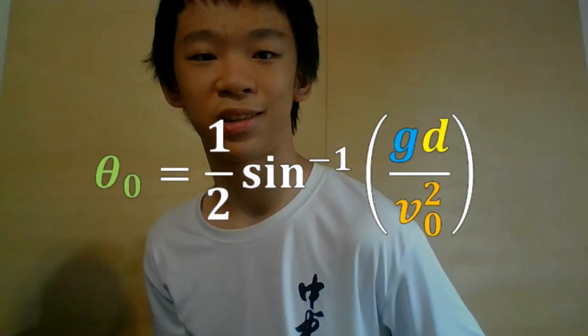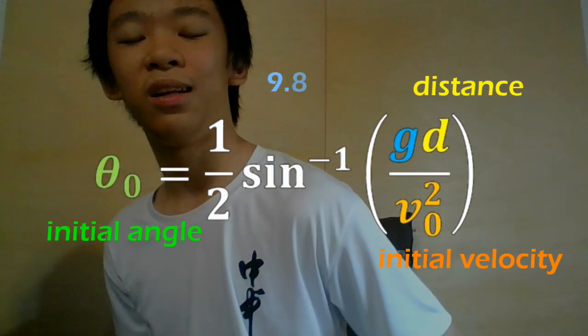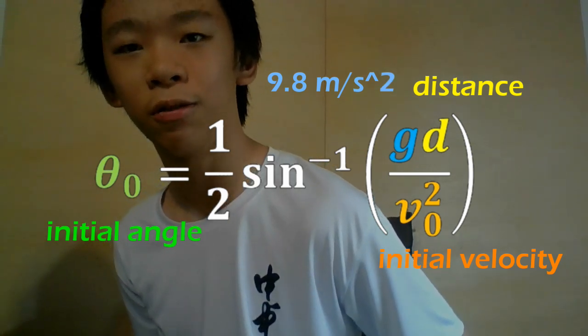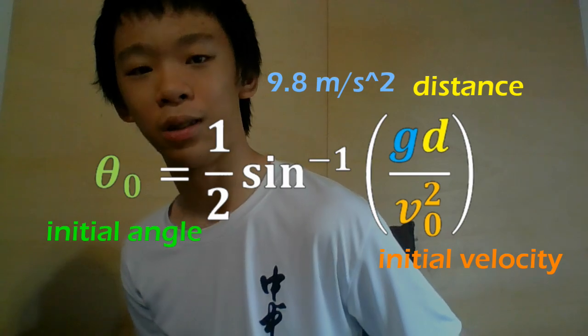I used projectile motion and a bit of high school kinematic knowledge to derive the formula for this angle. The formula looks like this. Where v0 is the initial velocity of the pitch, d is the distance to home base, g is the gravitational field, and theta is the most efficient angle.